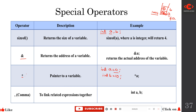The comma is used to separate variables or link related expressions together. For example, 'int a, b' declares two different variables. Without the comma, 'int ab' would be treated as a single variable, and 'int a b' with a space would throw an error. So we use the comma to separate variables in declarations, scanf, and printf statements.